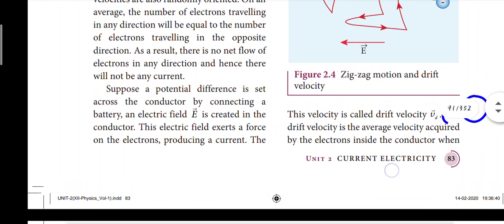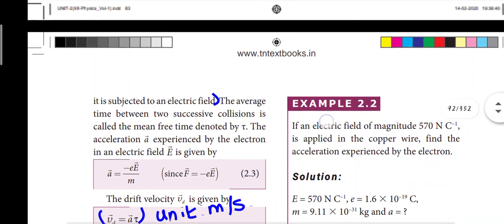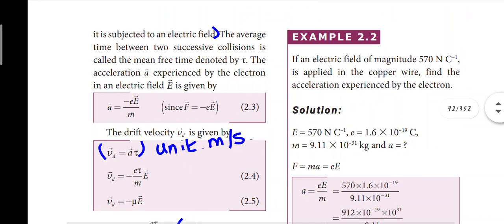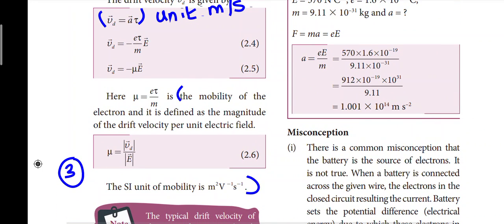Page 83: the drift velocity is the average velocity acquired by electrons inside a conductor when it is subjected to an electric field. Vd = aτ (a times tau). The mobility of an electron is defined as the magnitude of the drift velocity per unit electric field. This is the third question answer, worth 2 marks.